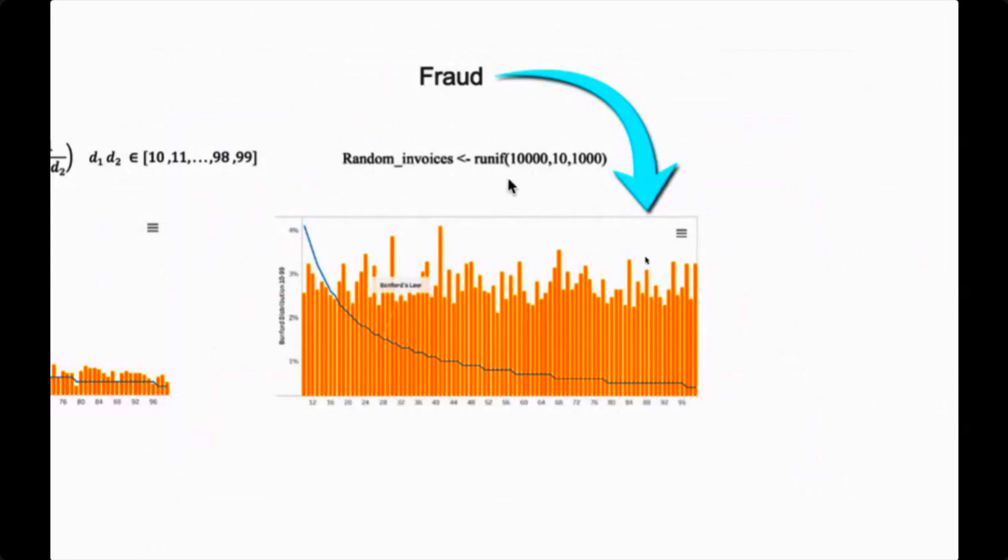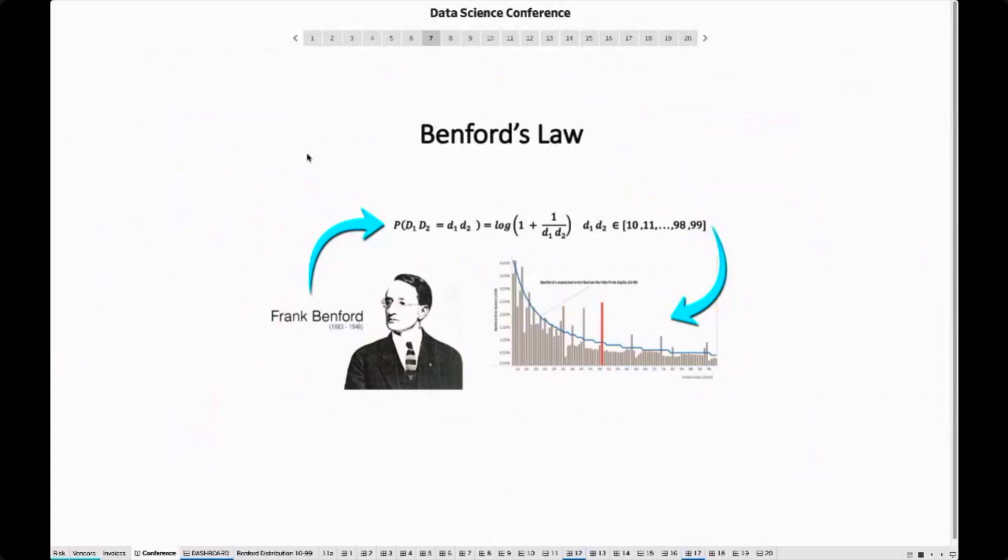For example, the following R code creates us 10,000 invoices ranging from $10 to $1,000. So to catch fraudsters, we need a technique. And one possible technique is Benford's law. Benford's law essentially states that the sequence of numbers is likely to be distributed in a specific way. In other words, lower digits have a higher probability of occurring than higher digits.